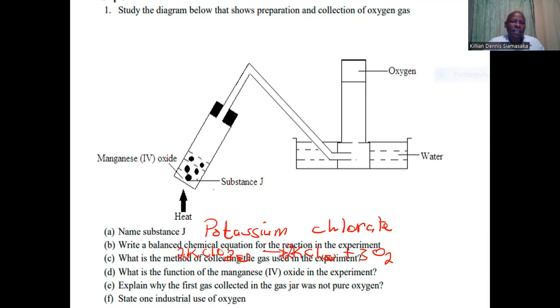What is the method of collection? The method of collection is downward displacement of water, meaning that water is displaced downward and then the oxygen goes up there.